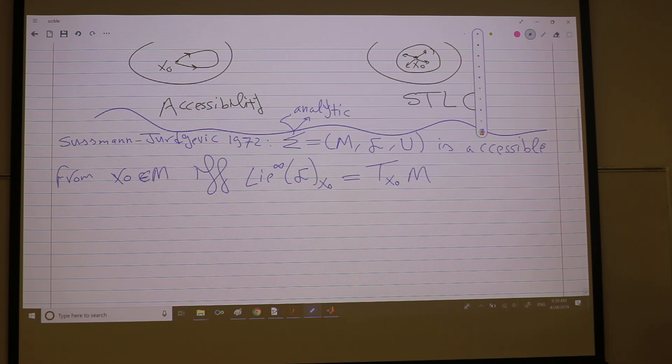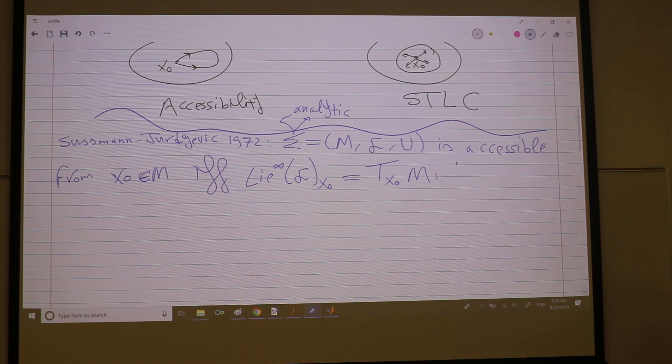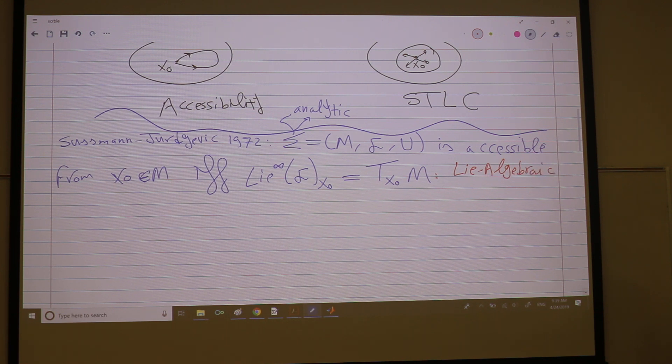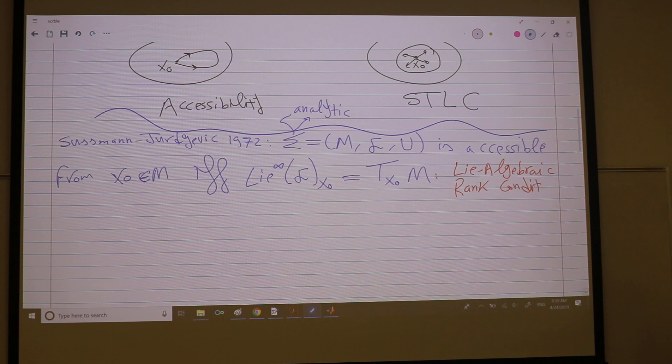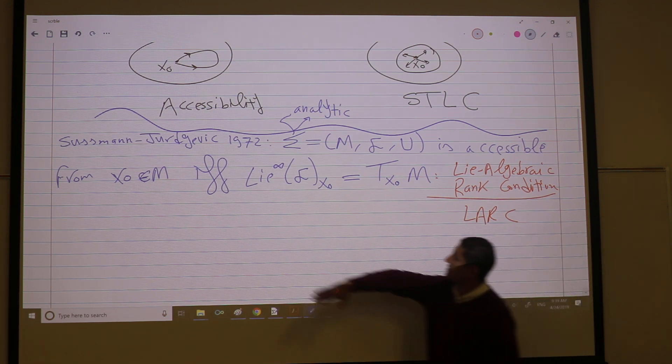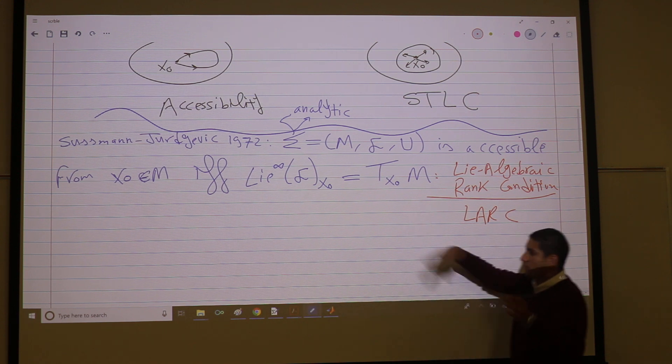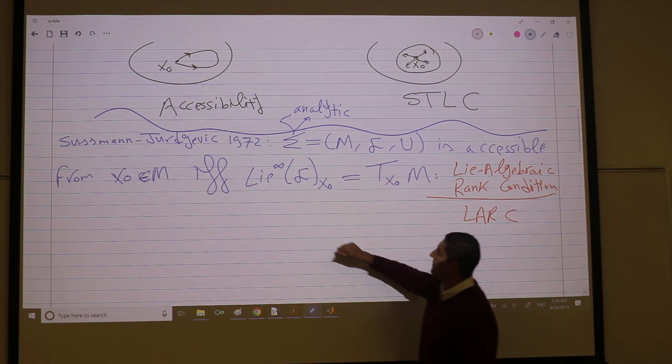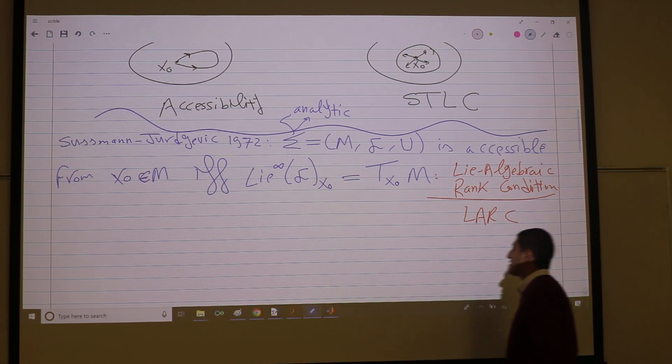This condition, what we refer to as the algebraic rank condition, for short LARC, we're going to refer to it many many times. The algebraic rank condition. So get your Lie brackets over and over again, construct all the combinations of your Lie brackets, compute it at the point, get the span. You must cover the entire tangent space.